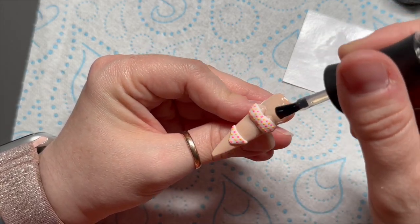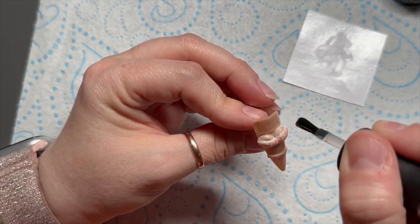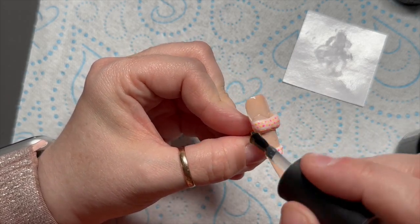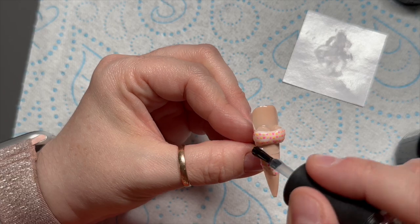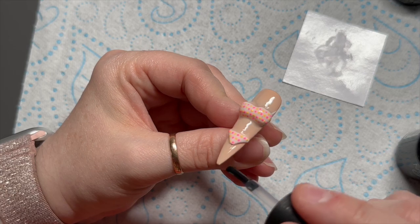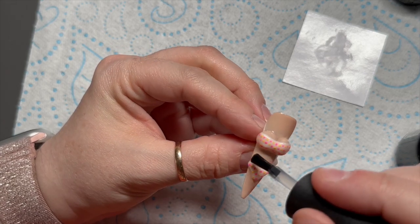And then I'm just going to shiny top coat her. You could matte top coat her, you could have top coated her at the beginning but I forgot. So I'm going to top coat her now and then once I'm happy that will go in the lamp and that's her finished.